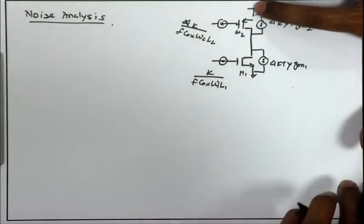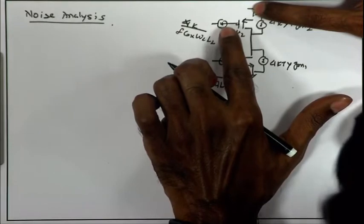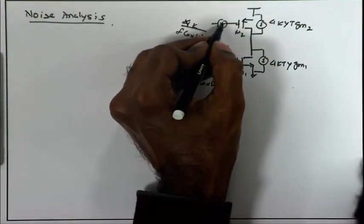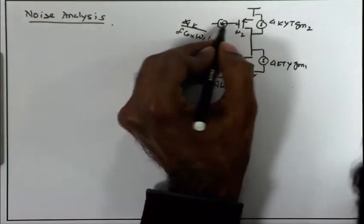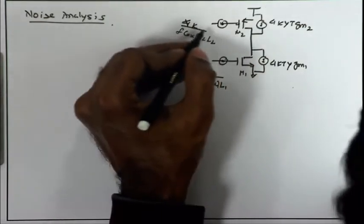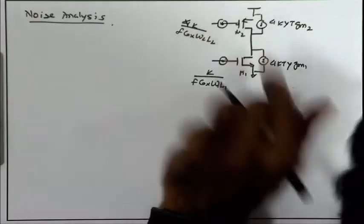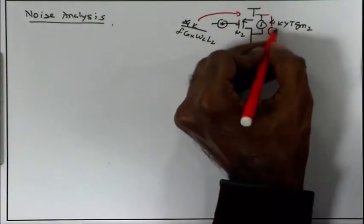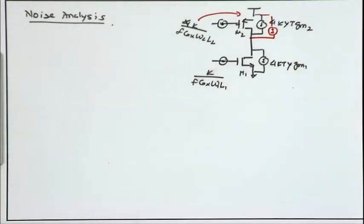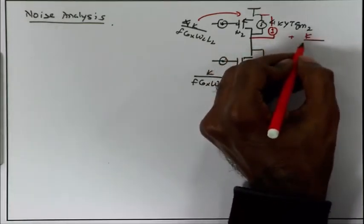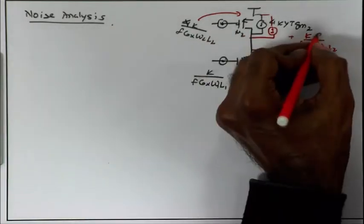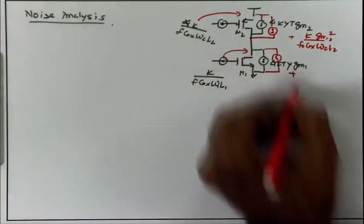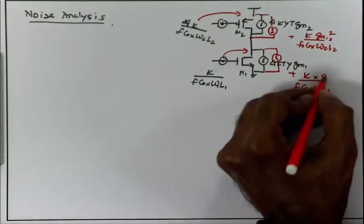Since the source is at AC ground, I can reflect the small-signal noise voltage at the gate into an equivalent drain current by multiplying by g_m². Taking the noise in the form of a current source and adding it in parallel, we get k/(f·C_OX·W2·L2)·g_m2² for M2, and k/(f·C_OX·W1·L1)·g_m1² reflected for M1.